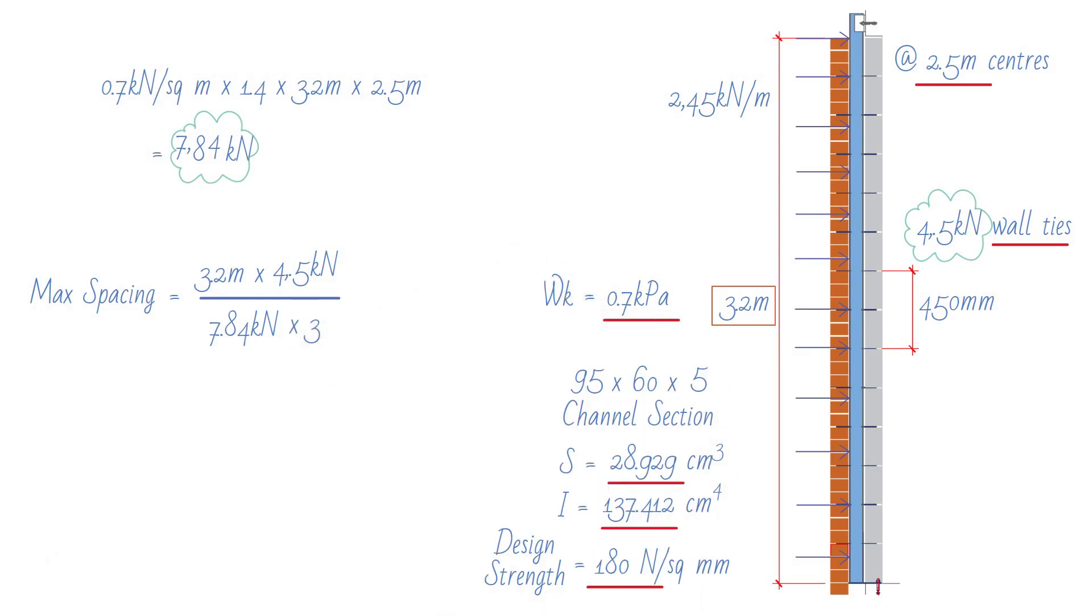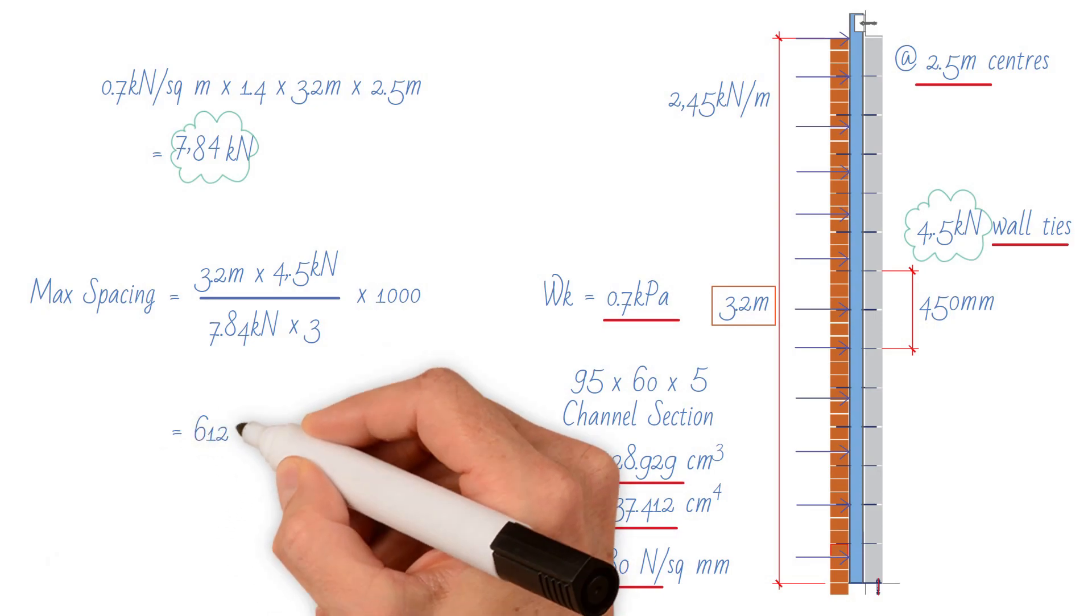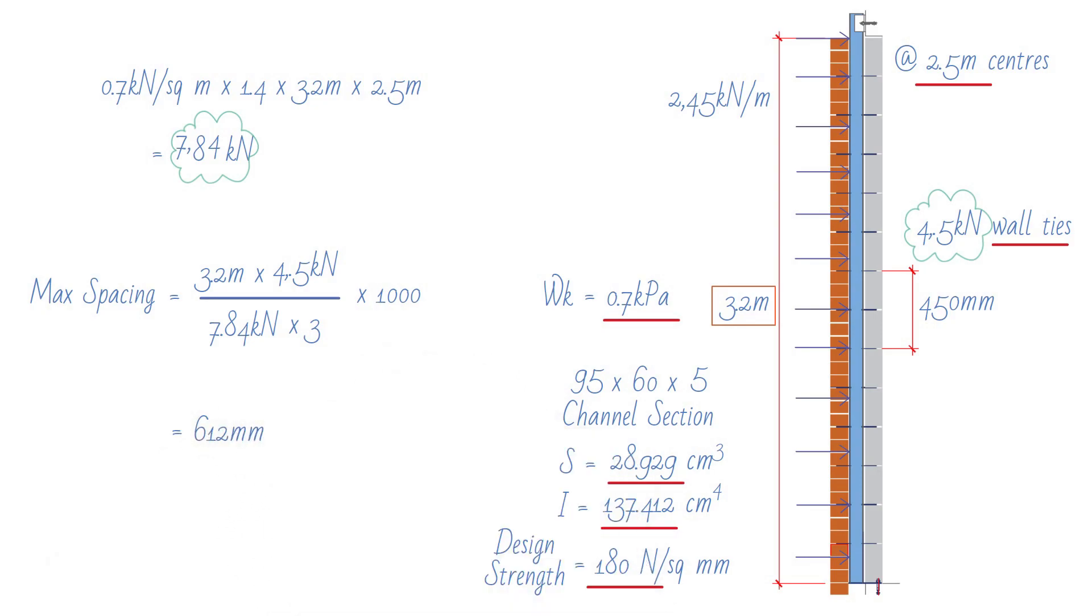Convert the result value from meter to millimeter by multiplying by 1000. Hence, the maximum spacing between ties equals 612 millimeters. Consequently, wall ties provided at a maximum of 450 millimeters centers is sufficient.